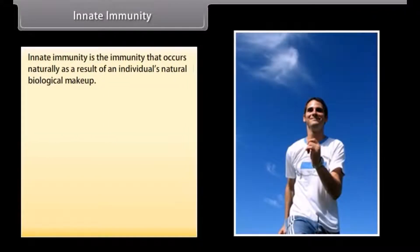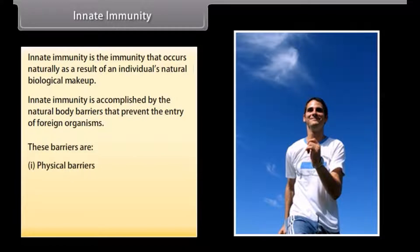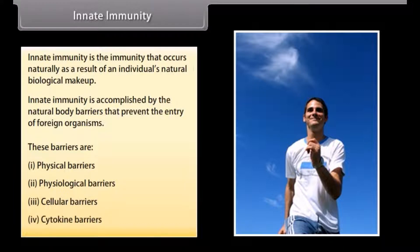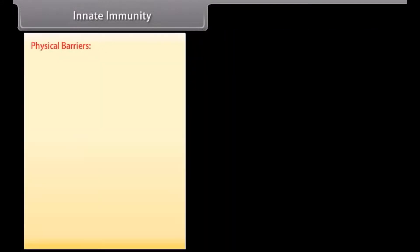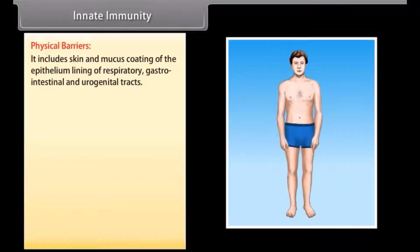Innate immunity is the immunity that occurs naturally as a result of an individual's natural biological makeup. Innate immunity is accomplished by the natural body barriers that prevent the entry of foreign organisms. These barriers are: physical barriers, physiological barriers, cellular barriers, and cytokine barriers.